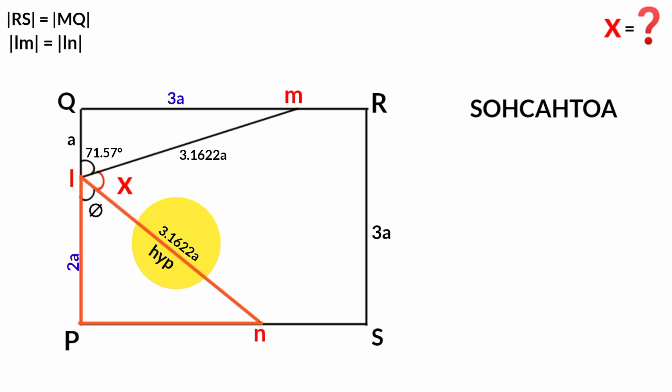This is the hypotenuse, this is the opposite, and this is the adjacent. Cos theta equals adjacent over hypotenuse. Adjacent is 2a and hypotenuse is 3.1622a. Now cos theta equals 2a over 3.1622a, which equals 0.6325. The exact value of theta will be cos inverse of 0.6325, which is 50.77 degrees.